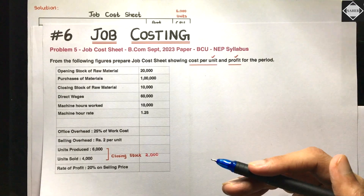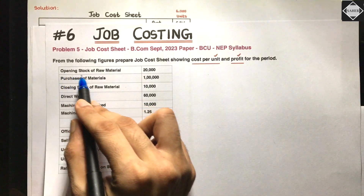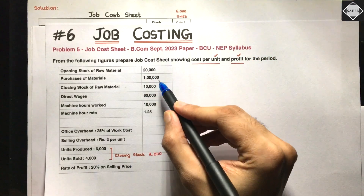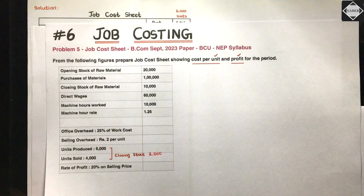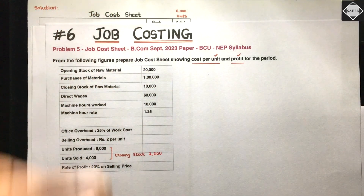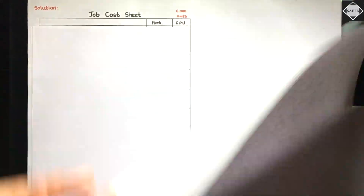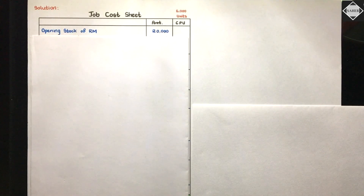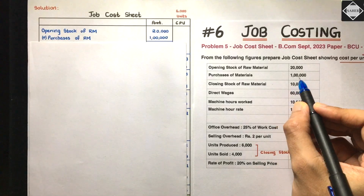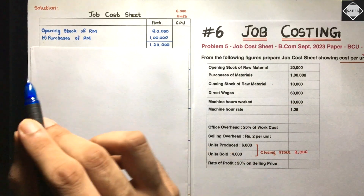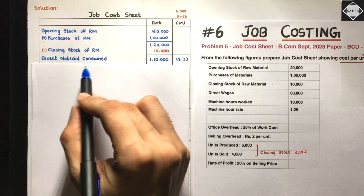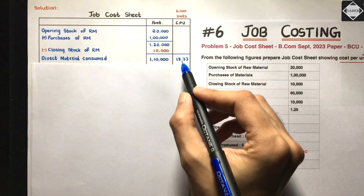From the following figures, prepare a job cost sheet showing cost per unit and profit for the period. We have opening stock of raw material 20,000, purchase of material 1,00,000, and closing stock of raw material 10,000. To calculate direct material: opening stock 20,000 plus purchases 1,00,000 equals 1,20,000, then subtract closing stock 10,000, giving direct material consumed of 1,10,000.